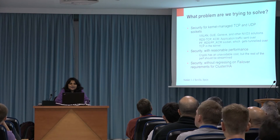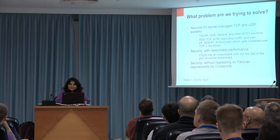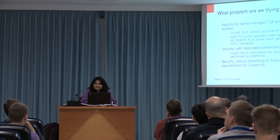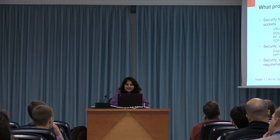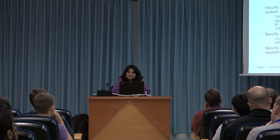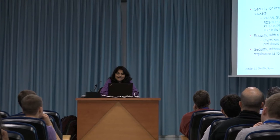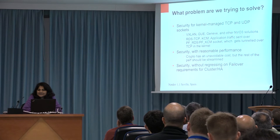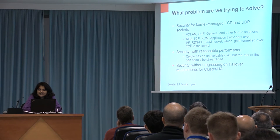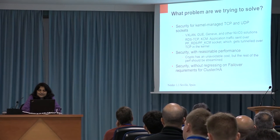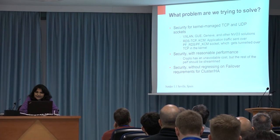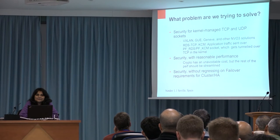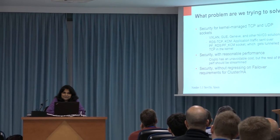Stepping back and looking at the problem we're trying to solve: we have a lot of kernel UDP sockets from things like VXLAN, GENEVE, and other NVO3 solutions. We also have recent interest in kernel TCP sockets from things like KCM and RDS-TCP. In all these cases, what we're trying to do is provide AAA — authentication, authorization, auditing, and privacy — without burning up too much performance. There is some unavoidable cost with crypto, but we want to keep that to a minimum and not leak performance elsewhere.